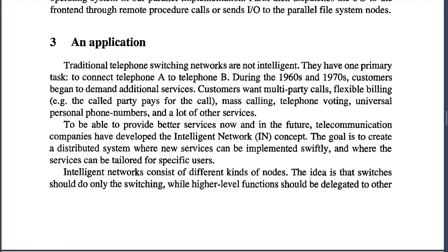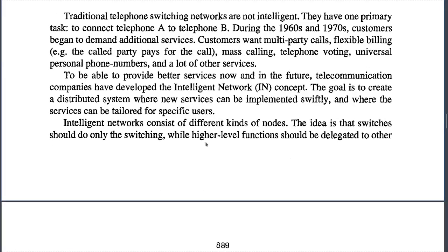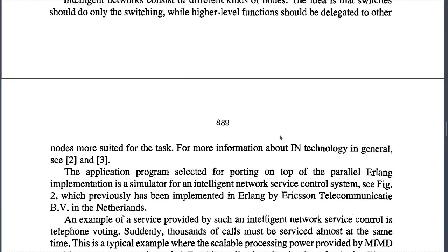In a traditional telephone switching network, switches are not intelligent — they have one primary task: to connect telephone A to telephone B. During the 1960s and 70s, customers began to demand additional services such as multi-party calls, flexible billing, call waiting, telephone voting, and universal personal phone numbers. To provide better services, telecommunication companies developed the intelligent network concept. The goal is to create a distributed system where new services can be implemented swiftly and tailored for specific users. In intelligent networks, switches should do only the switching, while higher-level functions are delegated to other nodes more suited for the task.